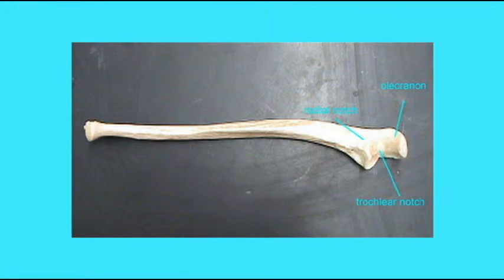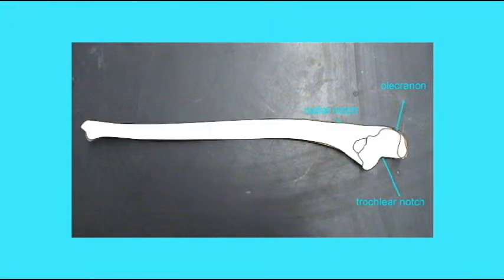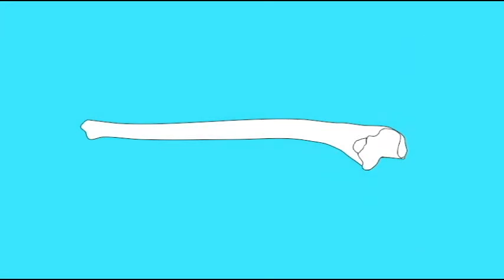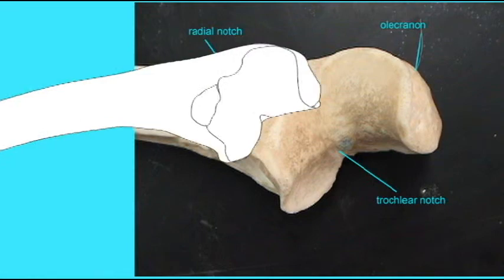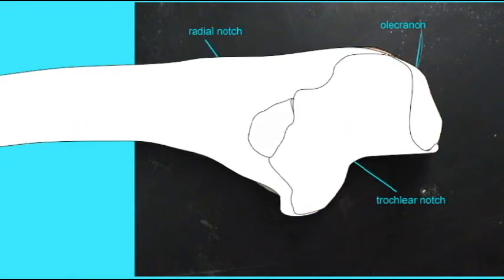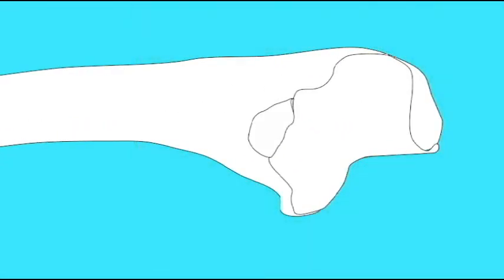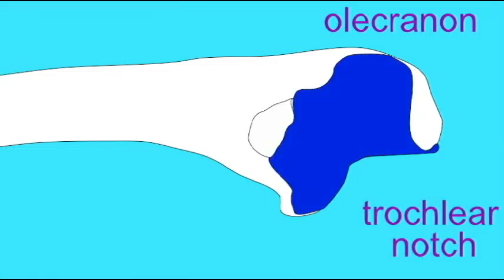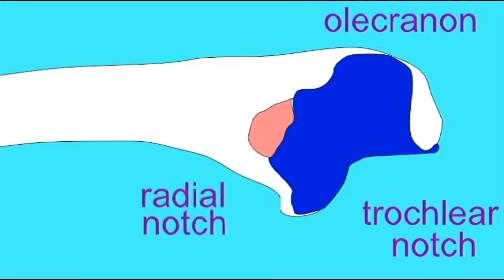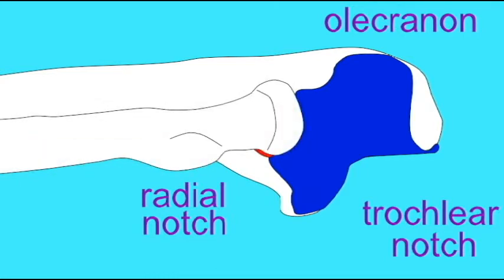The ulna has that large knob known as the elbow or olecranon. The trochlear notch is the part of the ulna which articulates with the trochlea at the distal end of the humerus. There is also a radial notch which faces laterally towards the radius. The ulna is the medial bone of the forearm, and the radius is the lateral bone. If you wave your hand goodbye and touch the head of your radius, you can feel it spin in the radial notch of your ulna.